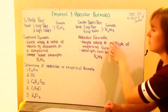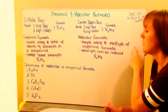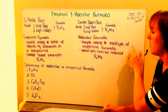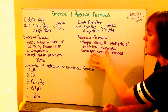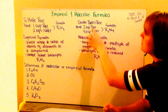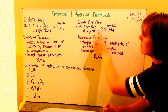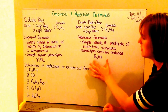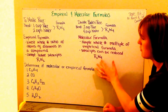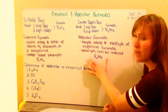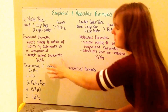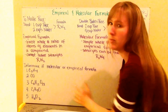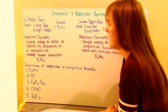A molecular formula is going to be the simple whole number multiple of an empirical formula, where my subscripts can be reduced. So I double my batch of rice to give me two cups of rice and four cups of water, so I have a formula of R2W4. This could be considered my molecular formula for rice, whereas R1W2 is considered my empirical formula.